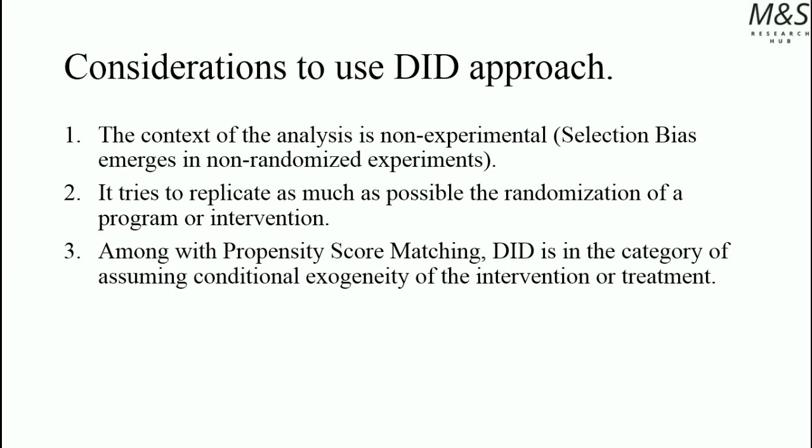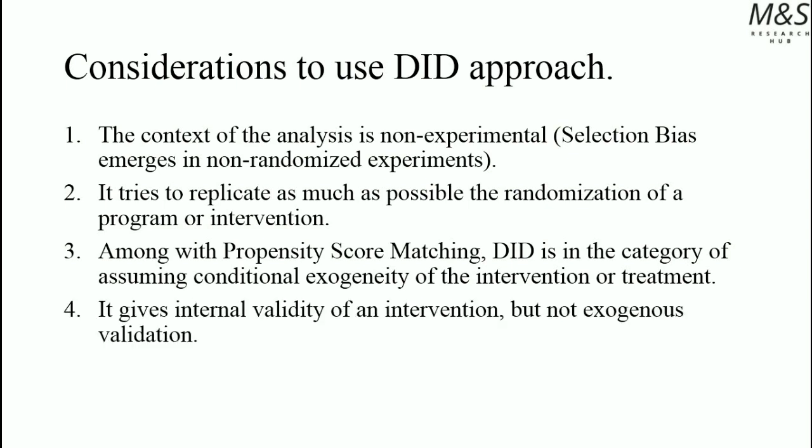Among methods such as propensity score matching, the difference-in-difference approach falls in the category of assuming conditional exogeneity of the intervention or the treatment. It gives internal validation of an intervention, but not exogenous validation. In impact evaluations, we require both internal validity and exogenous validation, because exogenous validation tells us whether we can implement the intervention in different contexts. However, the difference-in-difference approach will only give internal validation, since we're relying on specific data related to certain characteristics of a population over time.